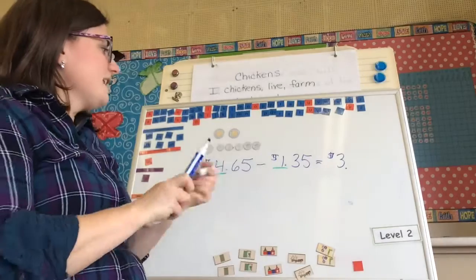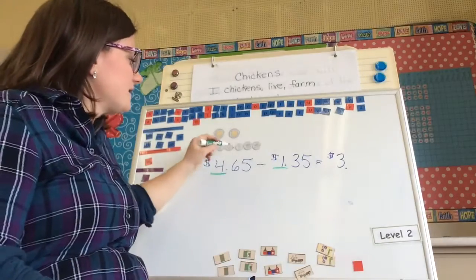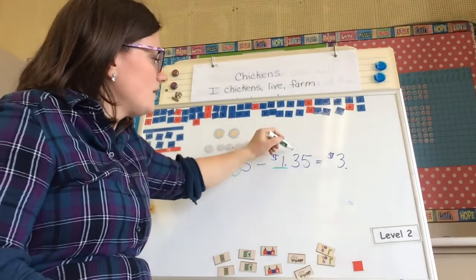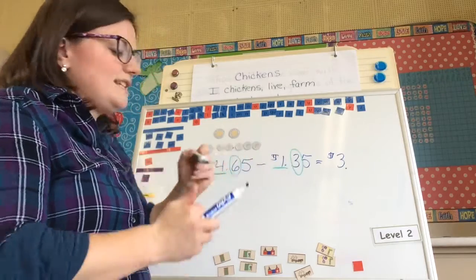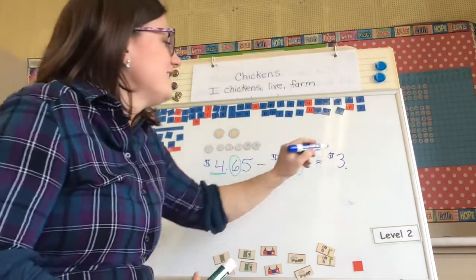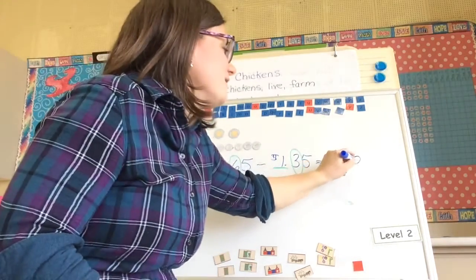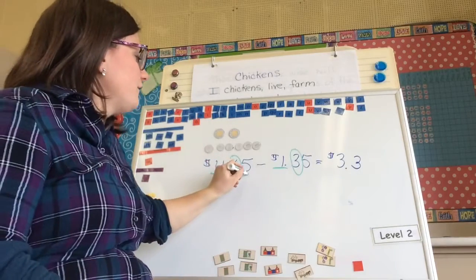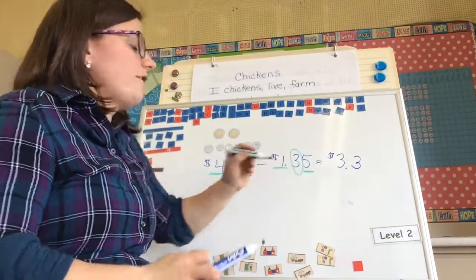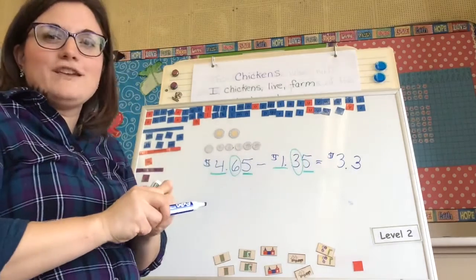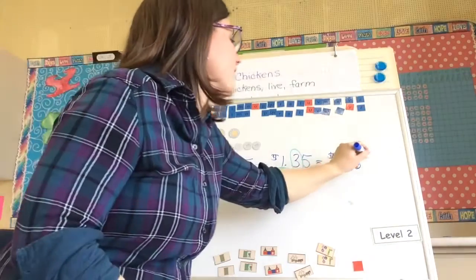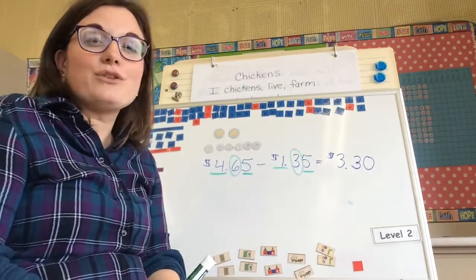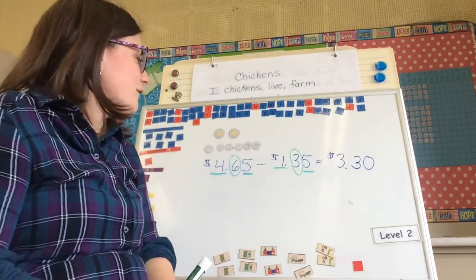Now let's do my cents. I have $0.60 and I want to take away $0.30, which gives me $0.30. Then I take away my $0.05, which gives me $0. So I would have $3.30 left.